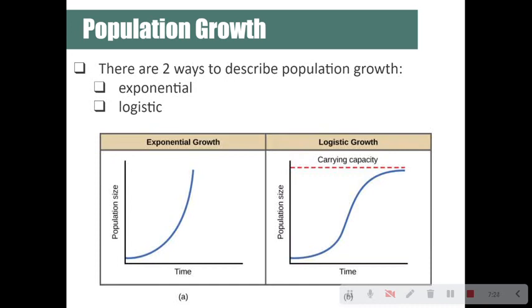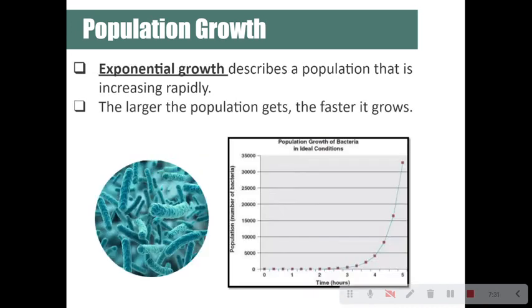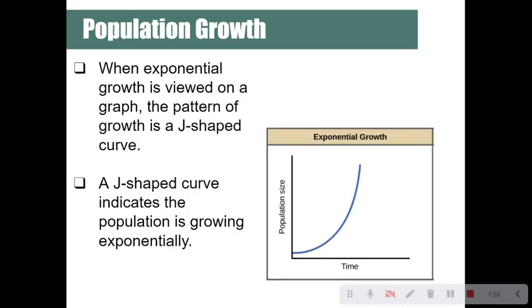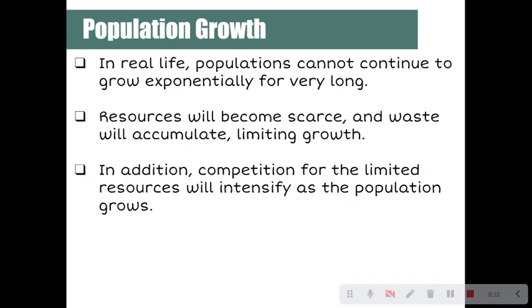There are two ways to describe population growth: exponential and logistic. Exponential growth describes a population increasing rapidly — the larger the population gets, the faster it will continue to grow. Bacteria are a classic example, multiplying so quickly that we see dramatic population growth. On a graph, exponential growth produces a J-shaped curve, which indicates the population is growing exponentially.